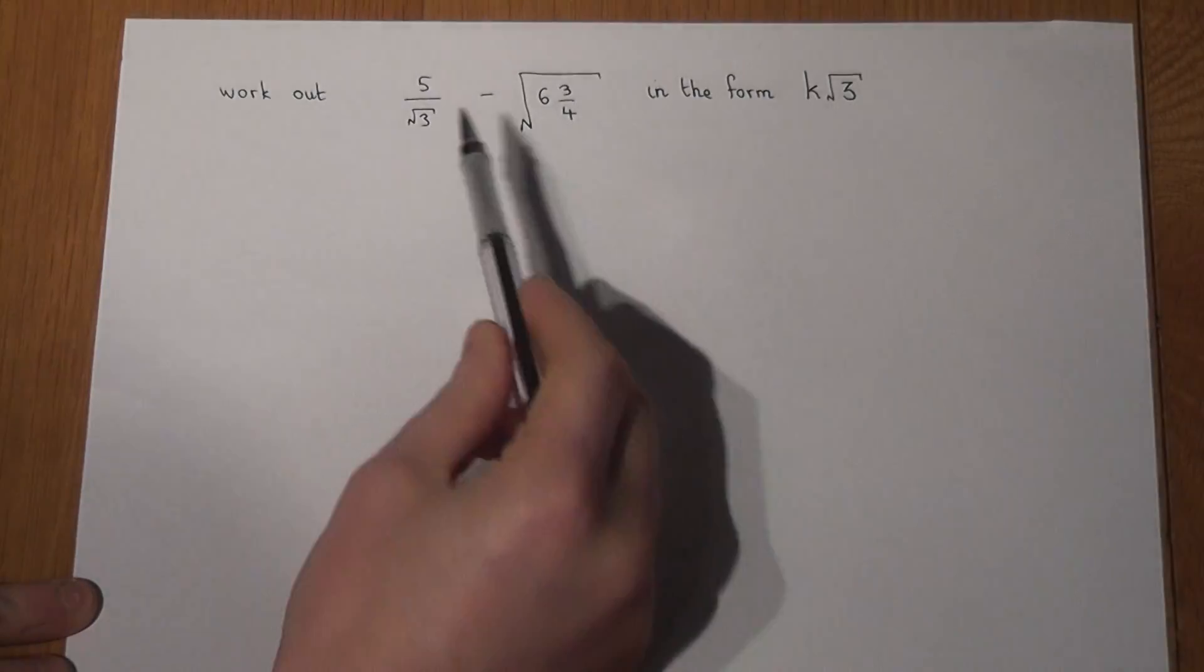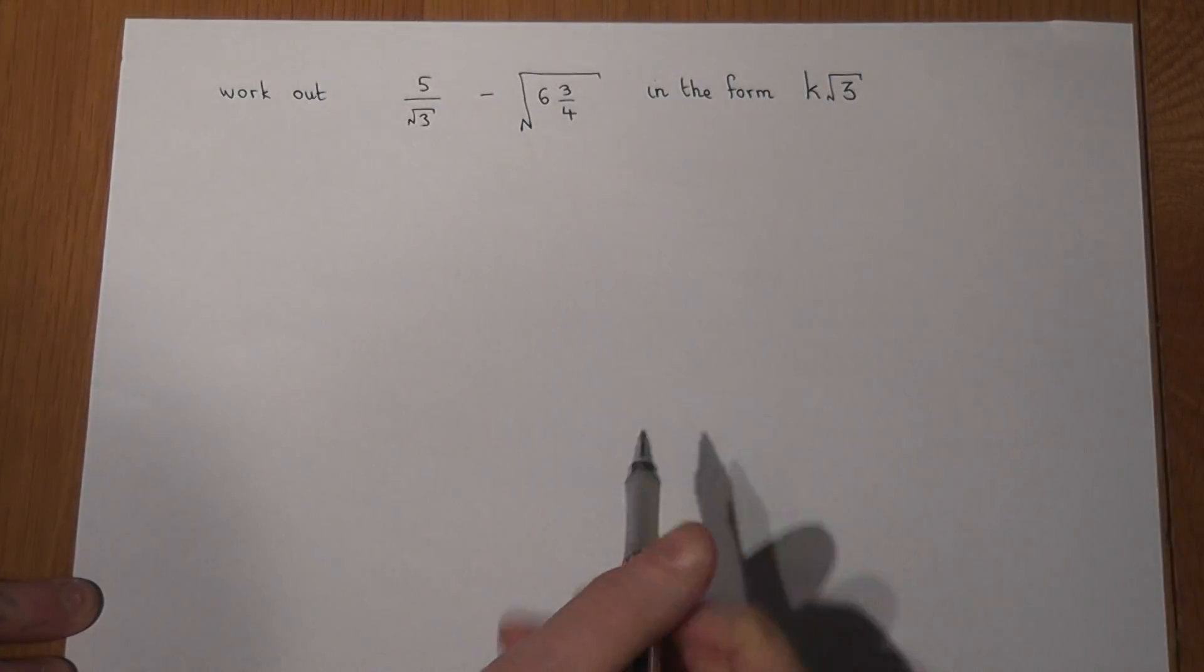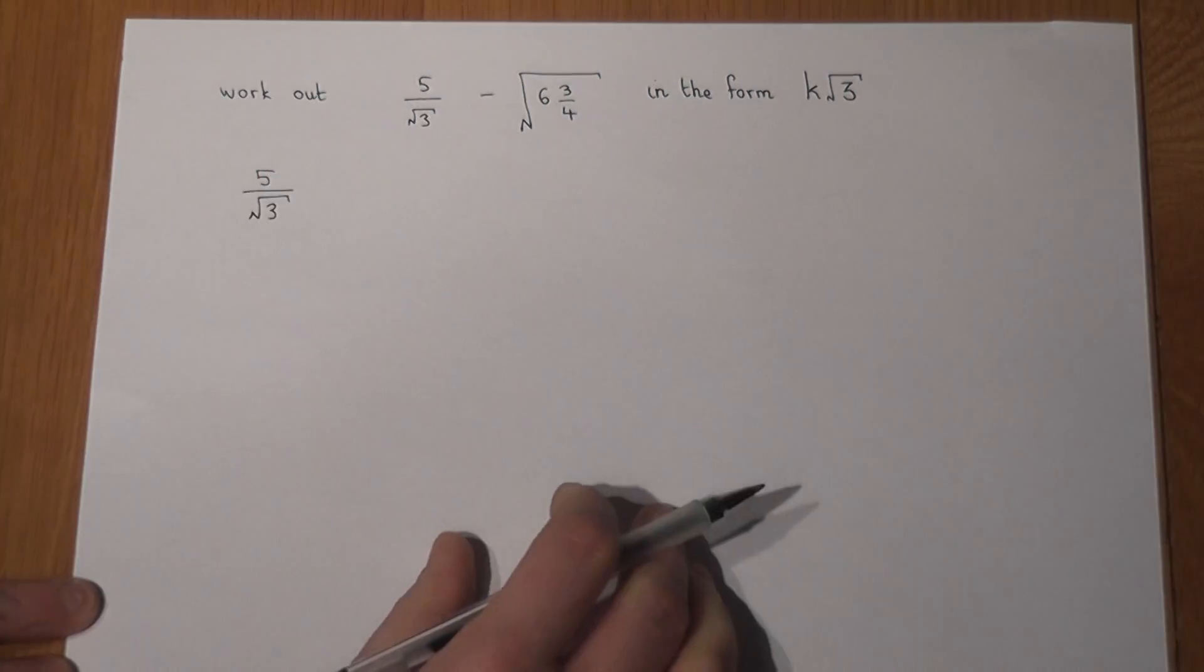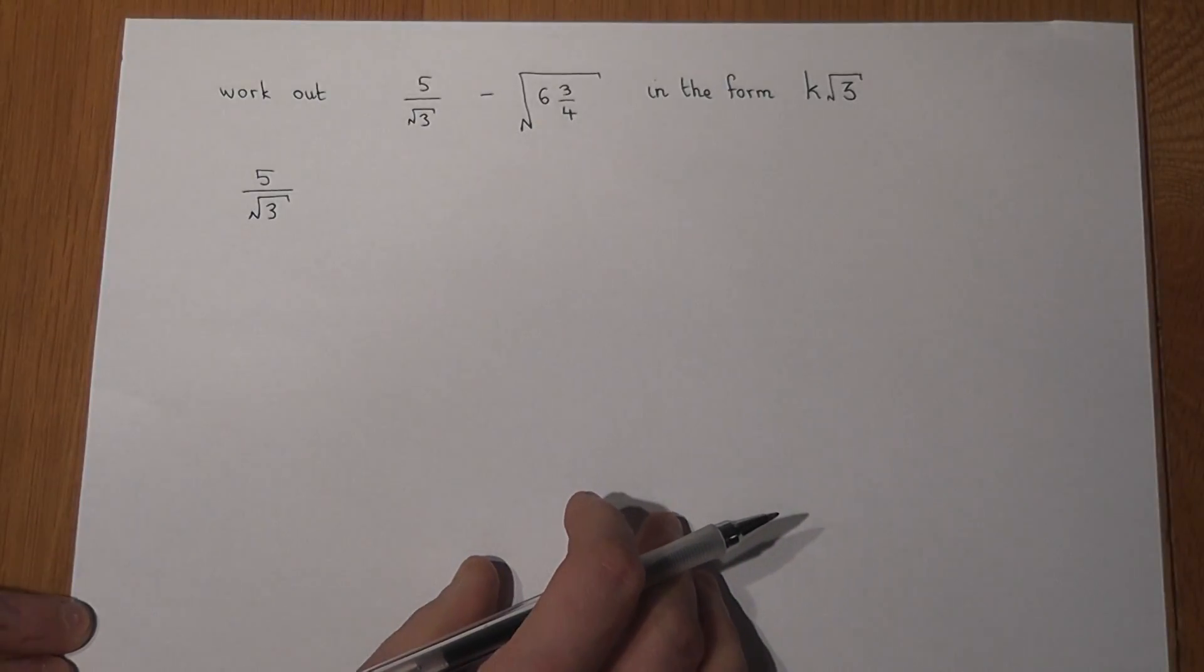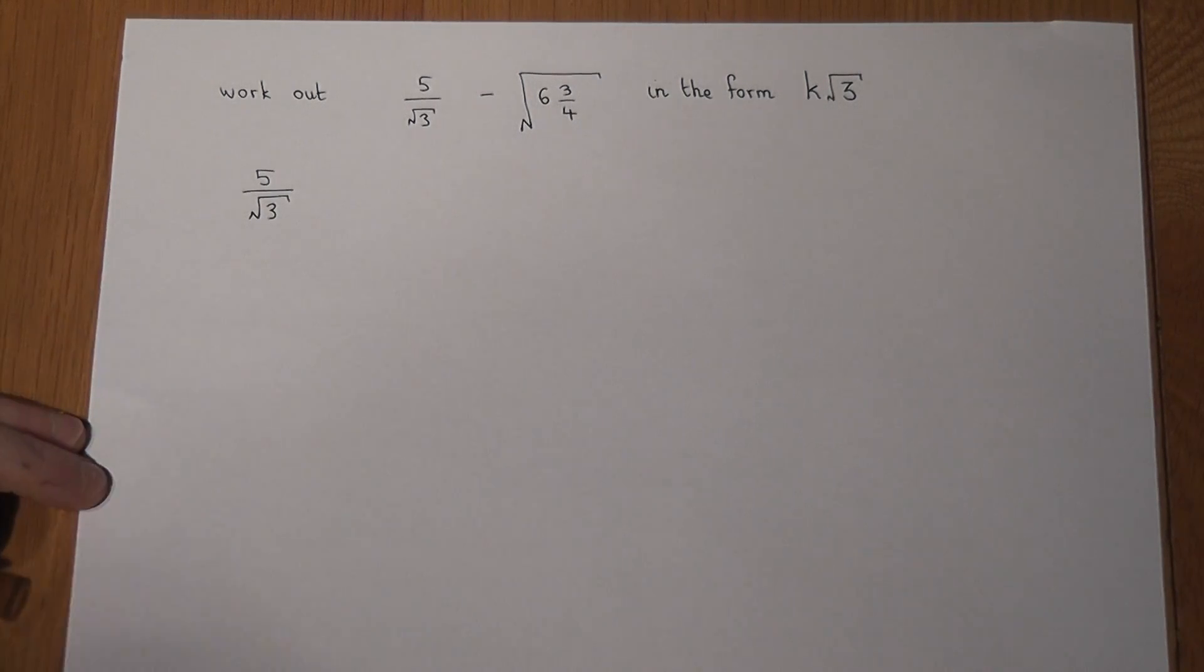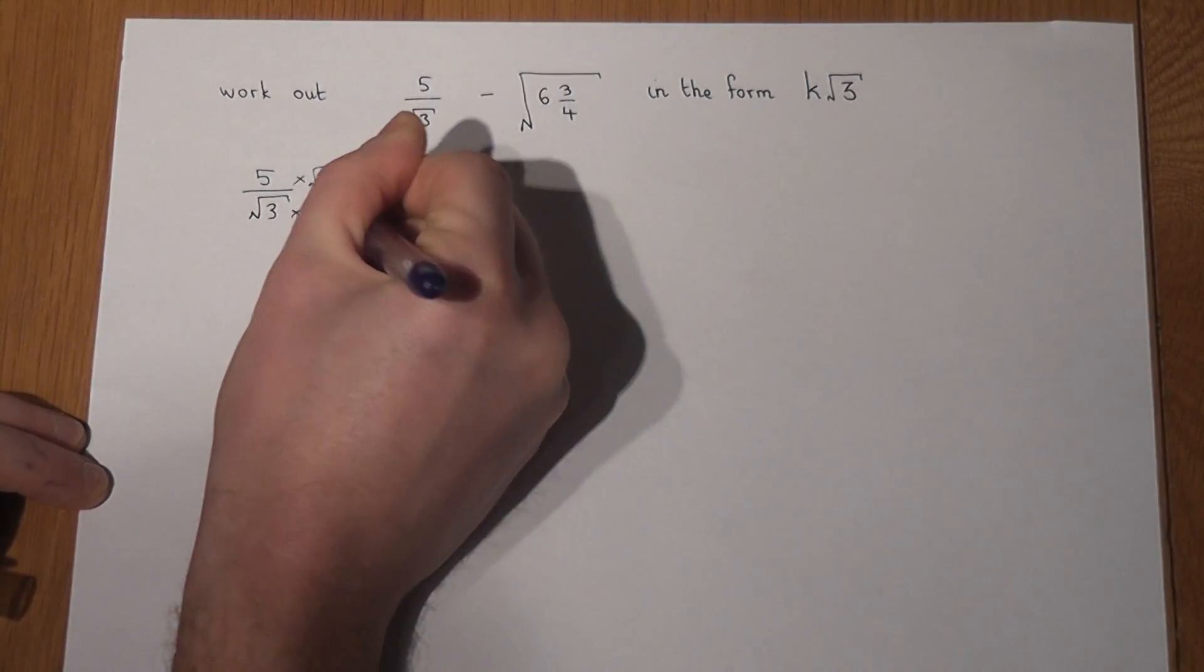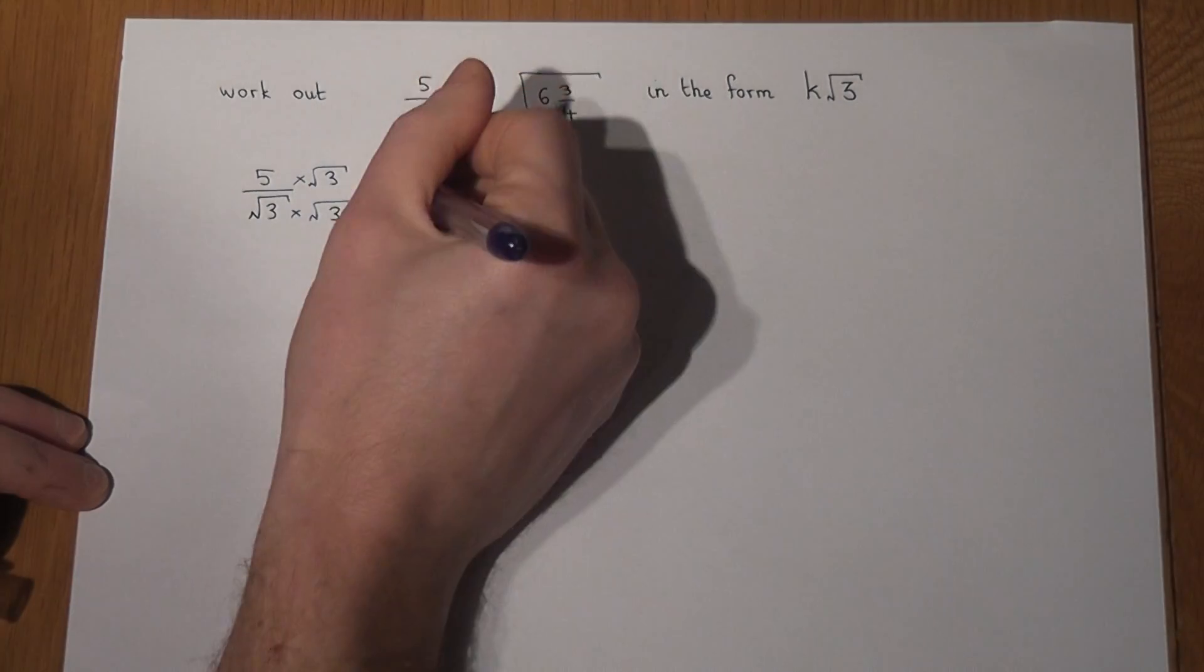Now the trick to these sort of questions is to try to work out both parts separately. If we look at 5 over root 3, there's one key skill which is called rationalize the denominator. To do this we multiply the top and the bottom of the fraction by the square root of 3 because one important thing will happen.